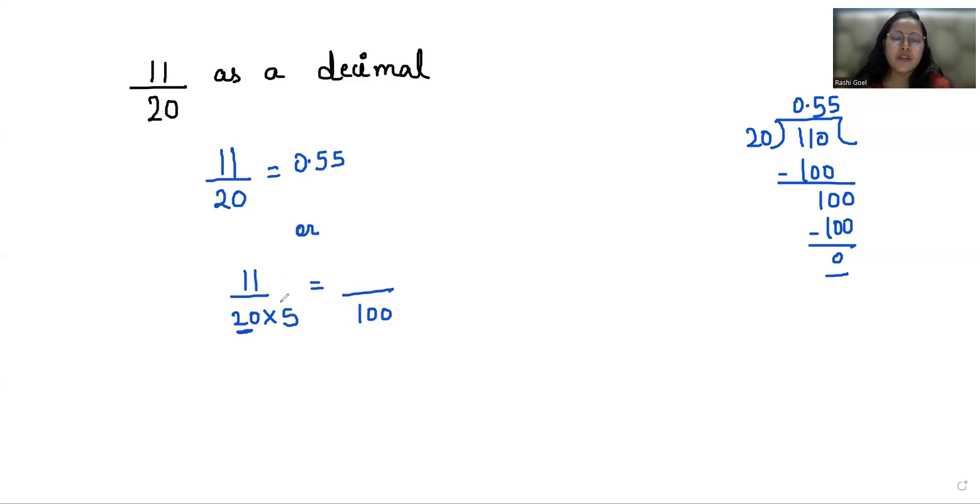So if we multiply 5 in numerator, we have to multiply in denominator as well. So our numerator becomes 55 and denominator is 100.